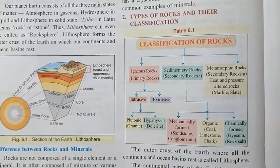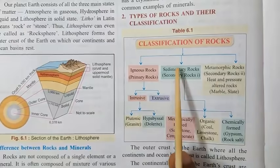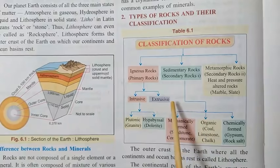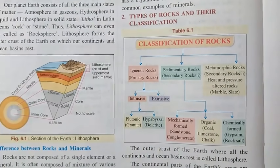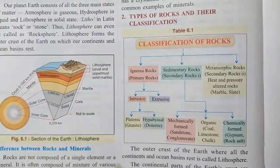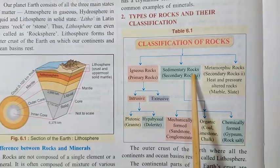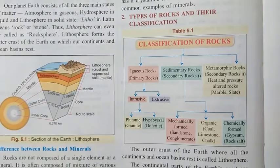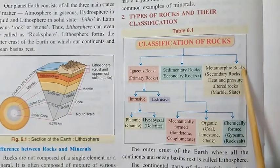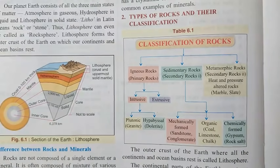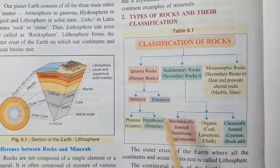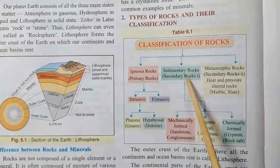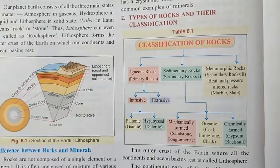Rocks can be classified into three types. The first is igneous rocks, also known as primary rocks. The second is sedimentary rocks, called secondary rock number one. The third is metamorphic rocks, which is secondary rock number two. So the three types of rocks are igneous, sedimentary, and metamorphic.